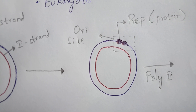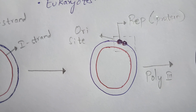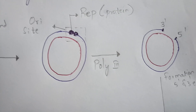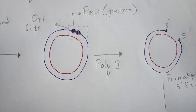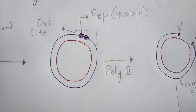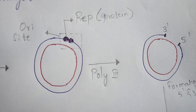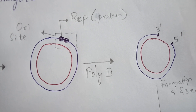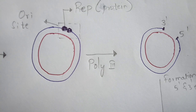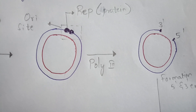The protein attaches at the ori site and causes breaking of the strand, initiating replication at that position. With the help of the Poly3 enzyme, there is a formation of 5' and 3' ends. As you know, the 5' end consists of a phosphate group and the 3' end consists of a hydroxyl group.